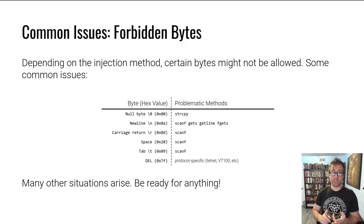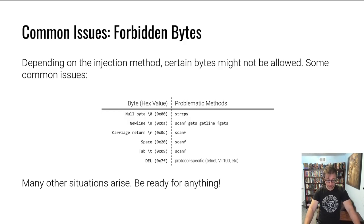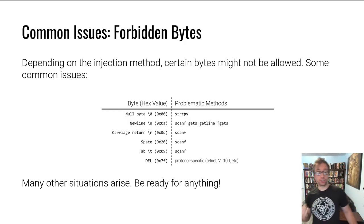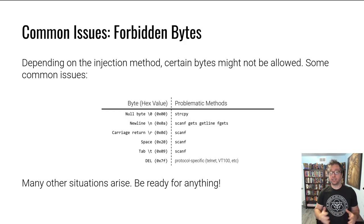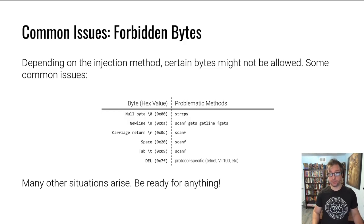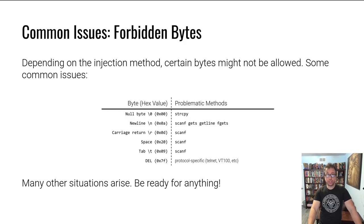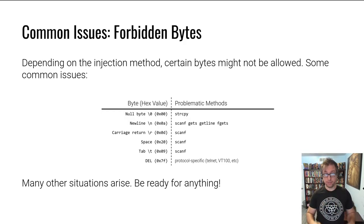Another common problem is newlines. If you're using something like scanf, gets, getline, or fgets — these are also very common unsafe functions that lead to overwrites. They terminate on a newline, and scanf also terminates on whitespace like space or tab. There are also other special characters like 0x7F that mean something special in certain protocols. You have to be ready to write shellcode that doesn't include these bad characters, otherwise your shellcode will get corrupted during transfer or the read process.